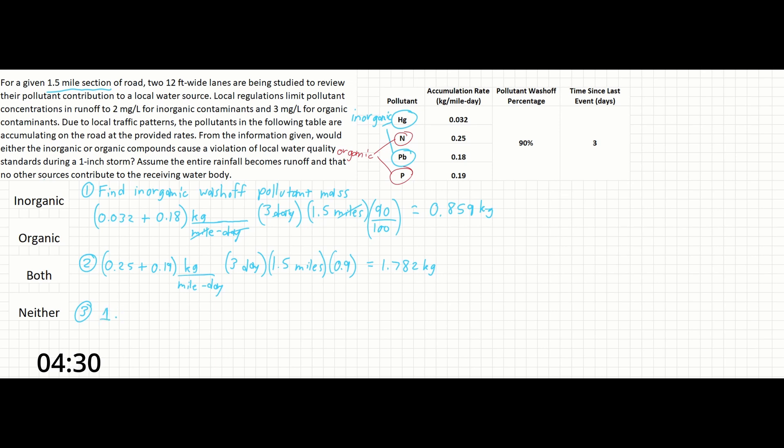So we have a one-inch storm. And let's convert this to liters, since that's what we need to compare our final results in later. So we have 1 inch times 1 foot over 12 inches times 1.5 miles of road.